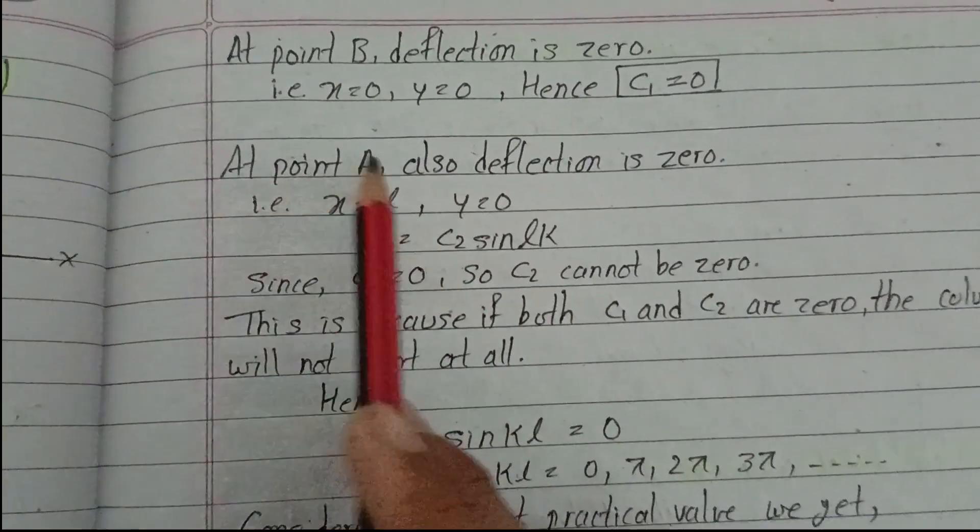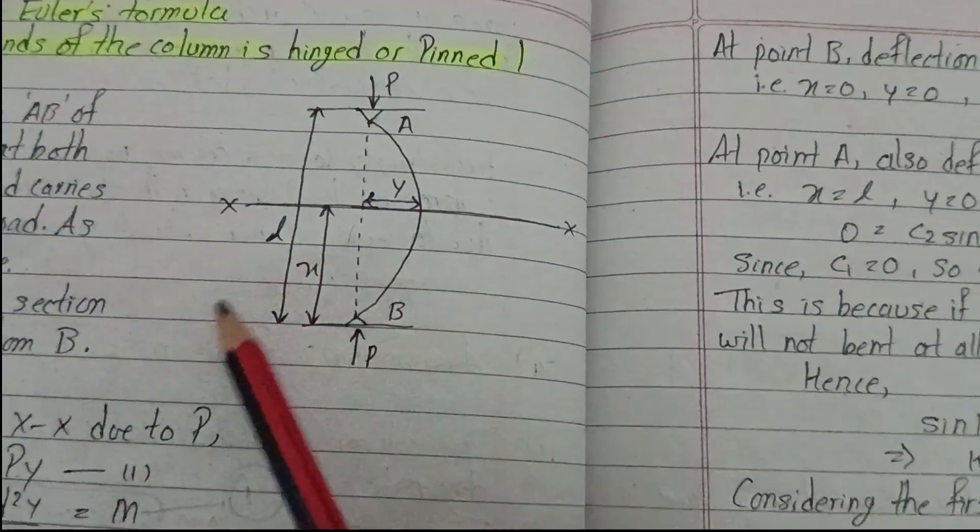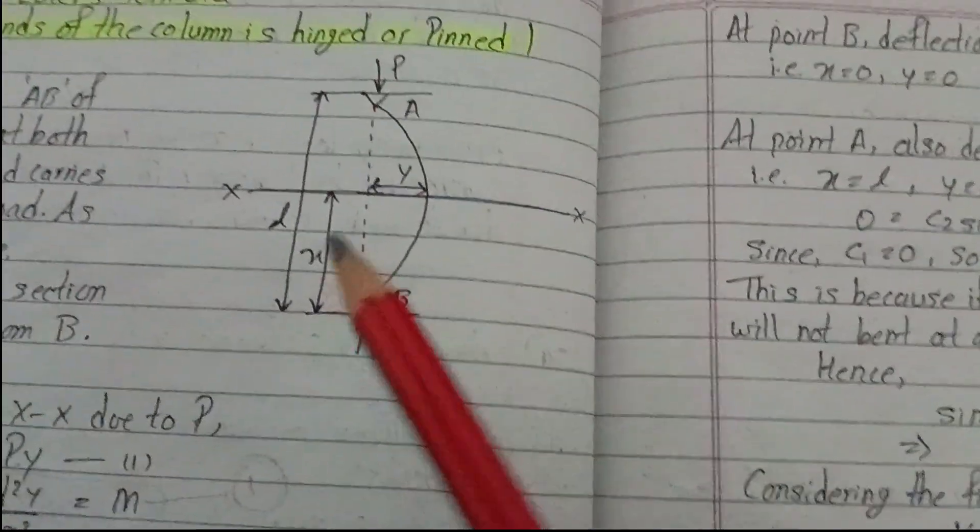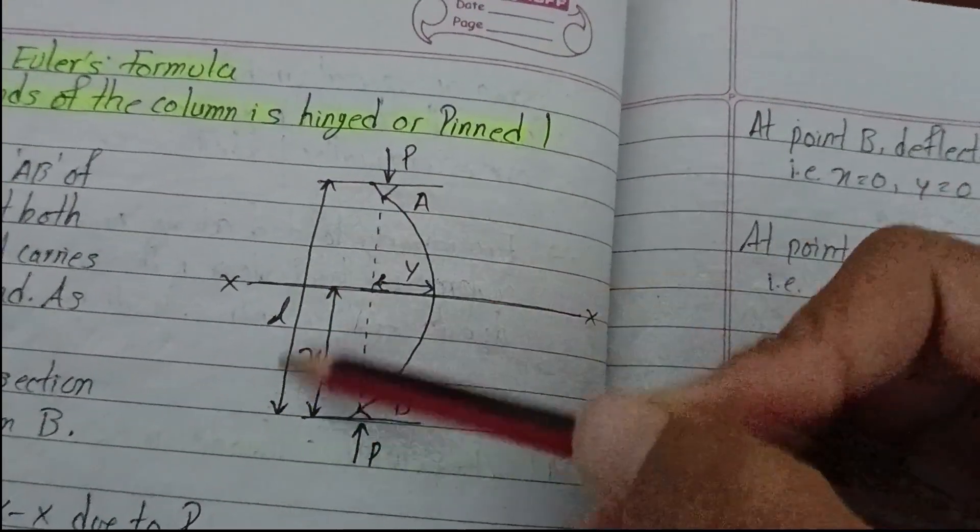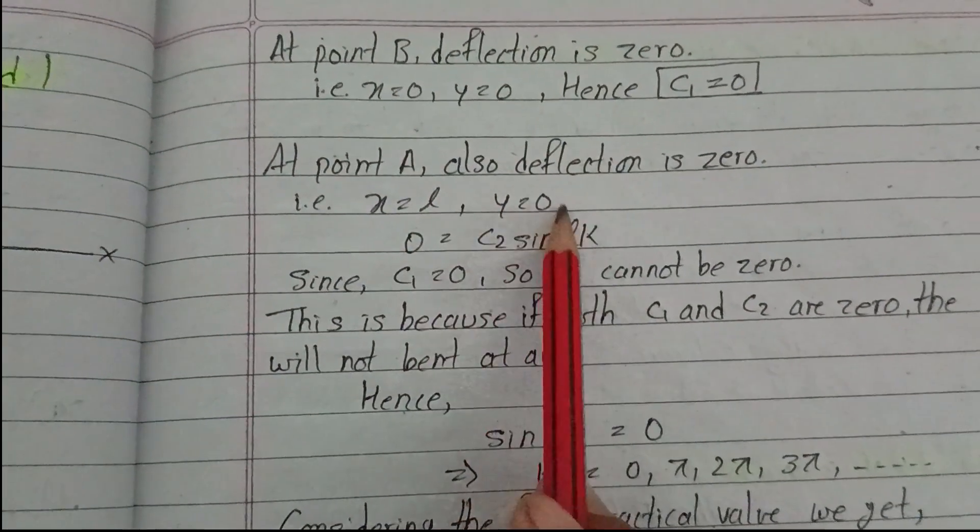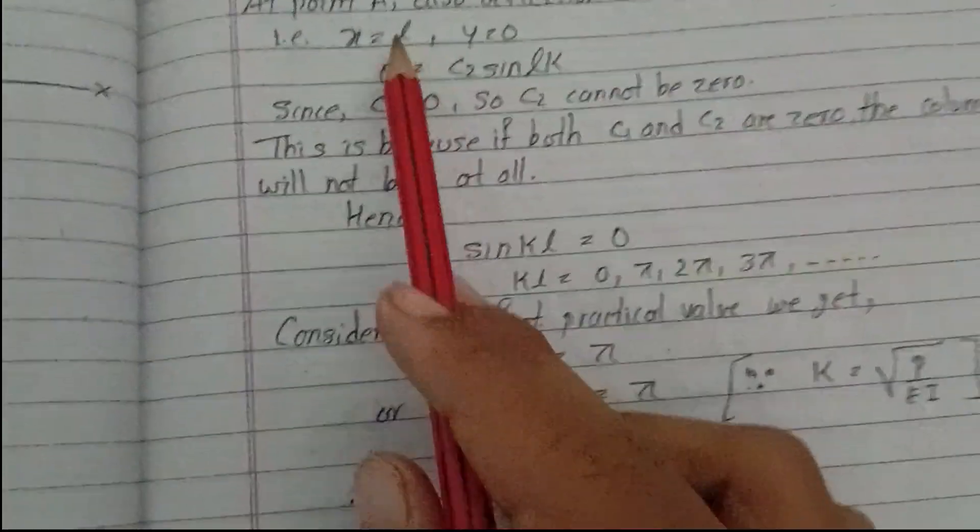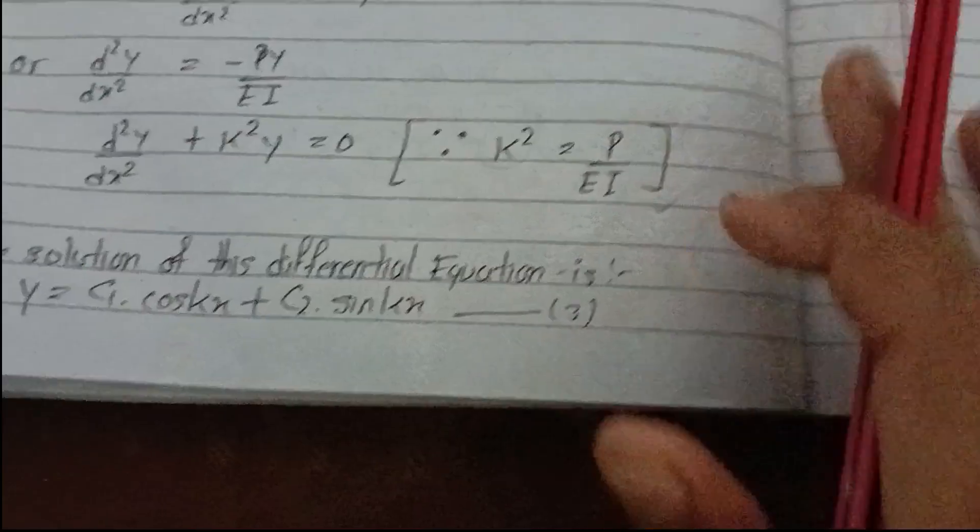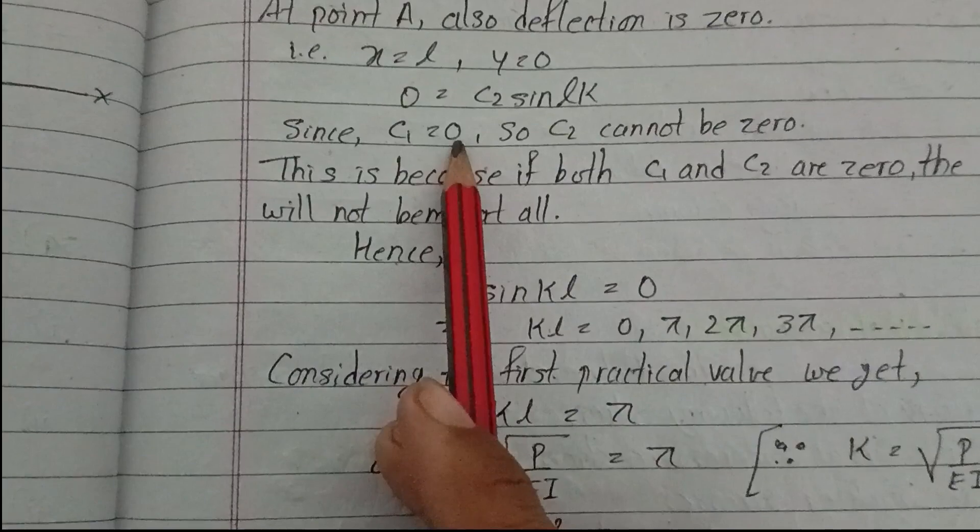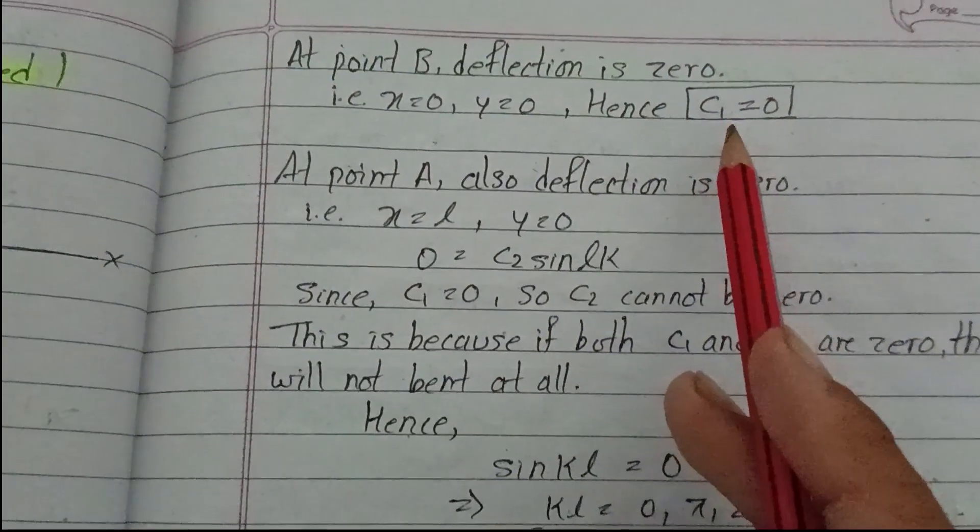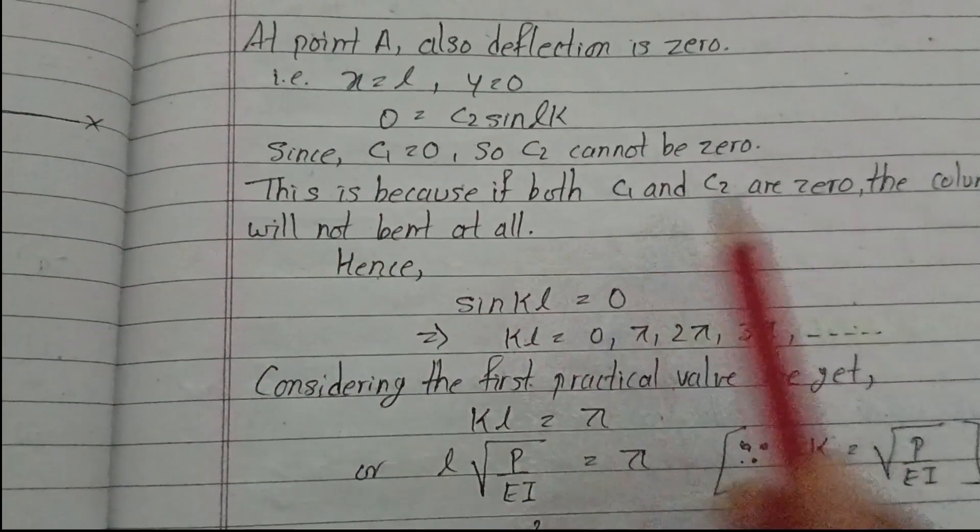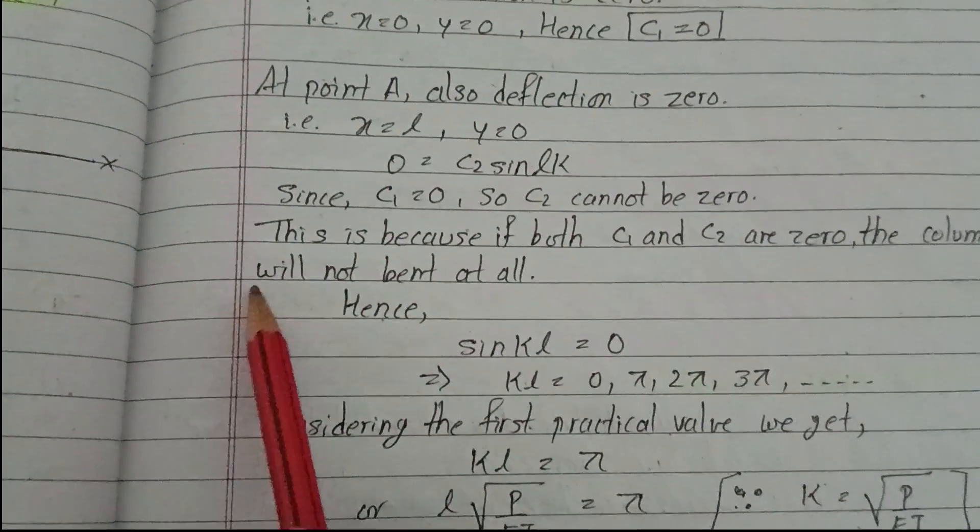At point A, deflection is also zero. Point A is at distance L from B, so when x equals L, y equals zero. This gives zero equals C₂ sin(kL). Now C₂ cannot be zero, because if both C₁ and C₂ are zero, the column will not bend at all. Hence, sin(kL) equals zero.